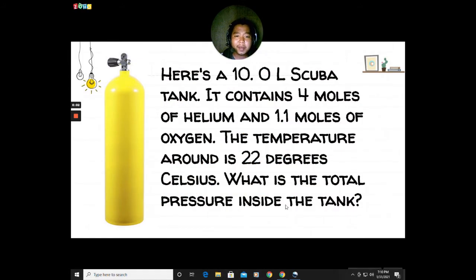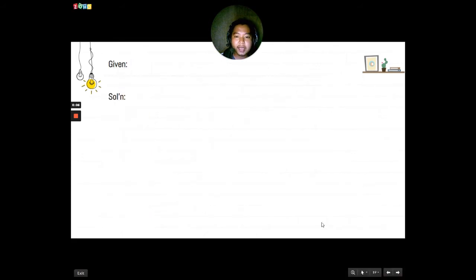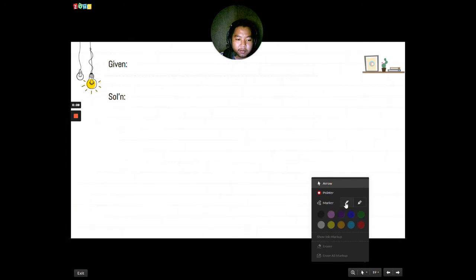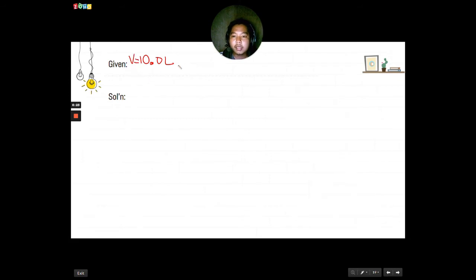To solve this problem, as usual, we have to first write the given. We have the volume is 10.0 liter. You can write this in your paper. The temperature is 22 degrees Celsius, and we should convert it to Kelvin. So 22 plus 273, that would be 295 Kelvin because that's our standard unit when computing.